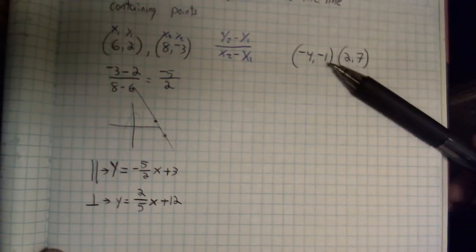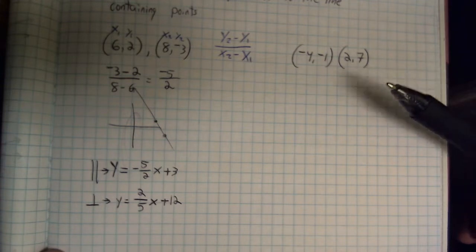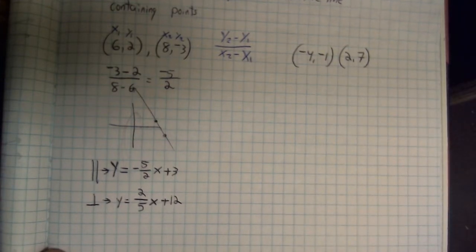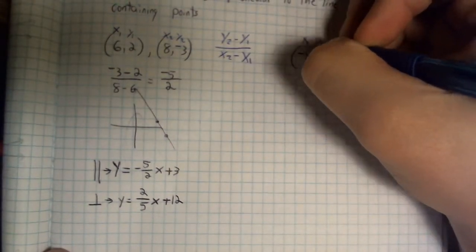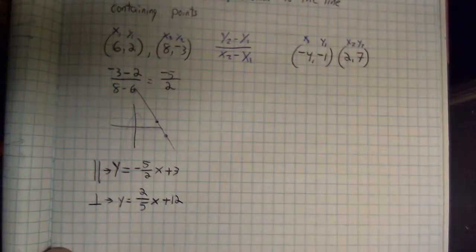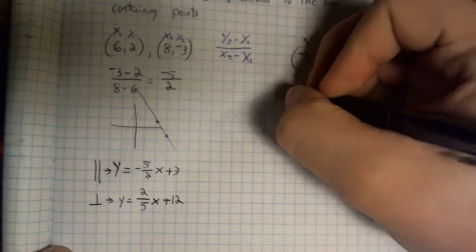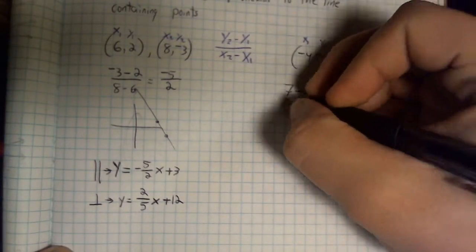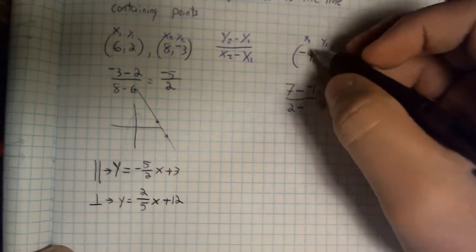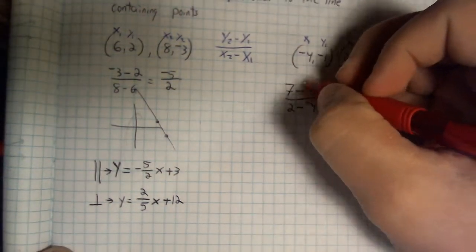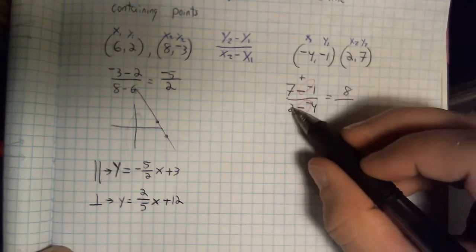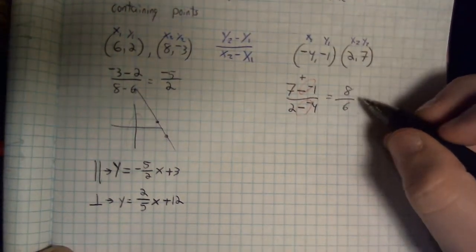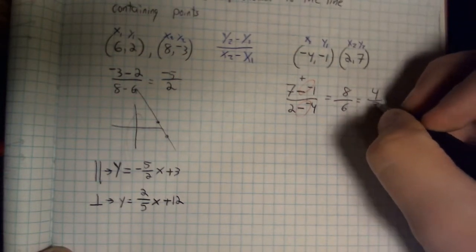Try doing this problem. Here are the coordinates of the two points — find the slope, then write a parallel and perpendicular line. Take a second to pause the video and try that one out. Here we go. I'm going to write down my x1, y1 and x2, y2 — I do this every time so I don't risk messing it up. y2 is 7 minus y1 is negative 1; x2 is 2 minus x1 is negative 4. I've got two double negatives, so I want to be adding: 7 plus 1 is 8, and 2 plus 4 is 6. I'm going to reduce — that gives me 4 over 3.